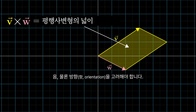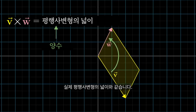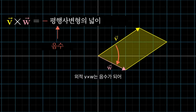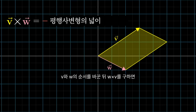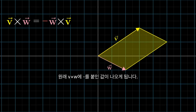Well, almost. We also need to consider orientation. Basically, if v is on the right of w, then v cross w is positive and equal to the area of the parallelogram. But if v is on the left of w, then the cross product is negative — namely the negative area of that parallelogram. Notice, this means that order matters. If you swap v and w, instead taking w cross v, the cross product would become the negative of whatever it was before.